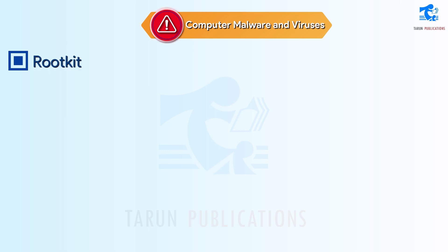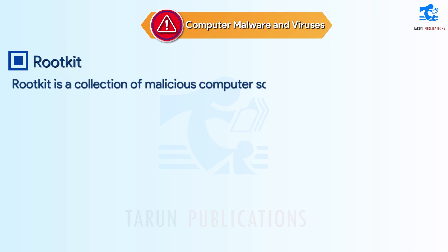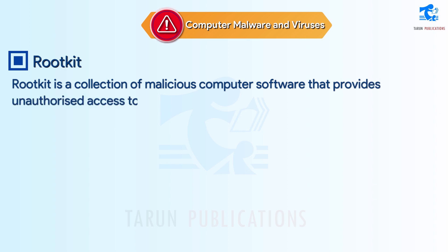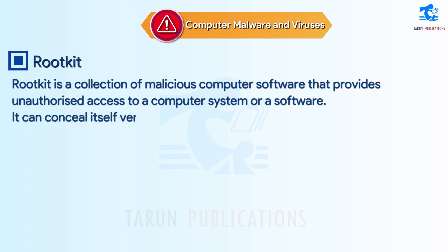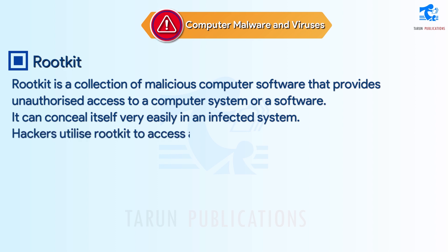Rootkit. Rootkit is a collection of malicious computer software that provides unauthorized access to a computer system or software. It can conceal itself very easily in an infected system. Hackers utilize Rootkit to access and steal data.